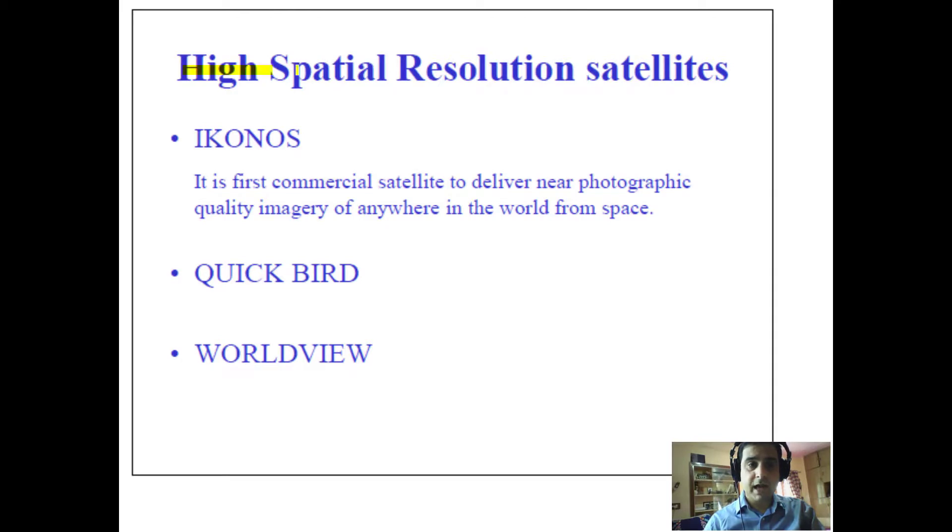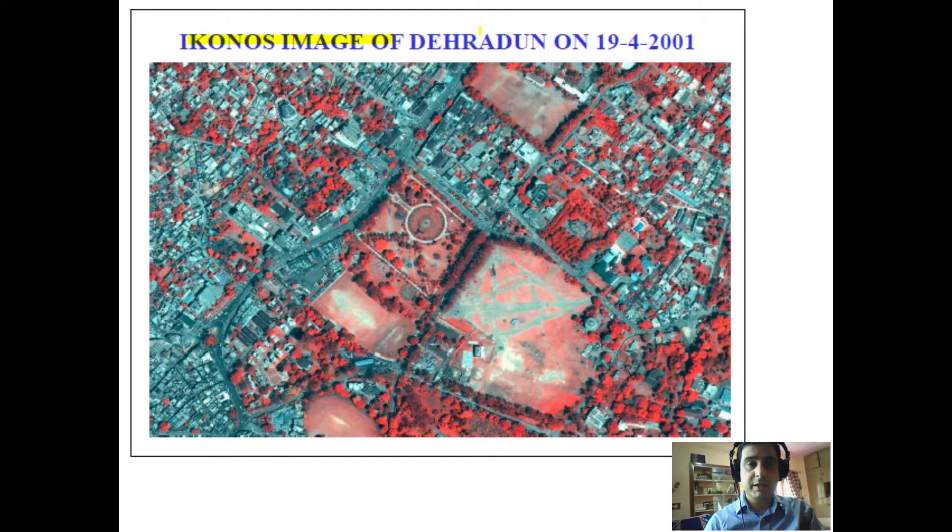Now talking about some high spatial resolution satellites, we have IKONOS, QuickBird and WorldView. These are the satellites which provide satellite images for Google Earth as well, which have a very high spatial resolution. And this is the IKONOS image of Dehradun of 2001. You can clearly see the grounds, you can see the sheds, you can see the road network, even if you zoom in you would be able to locate the vehicles.